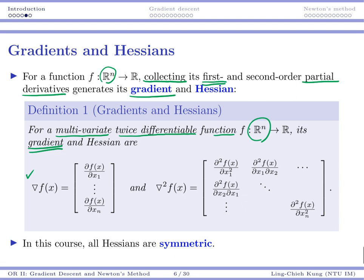So a gradient is always a vector. If your function has n input, then your gradient is an n by 1 vector. So that's first order derivatives.